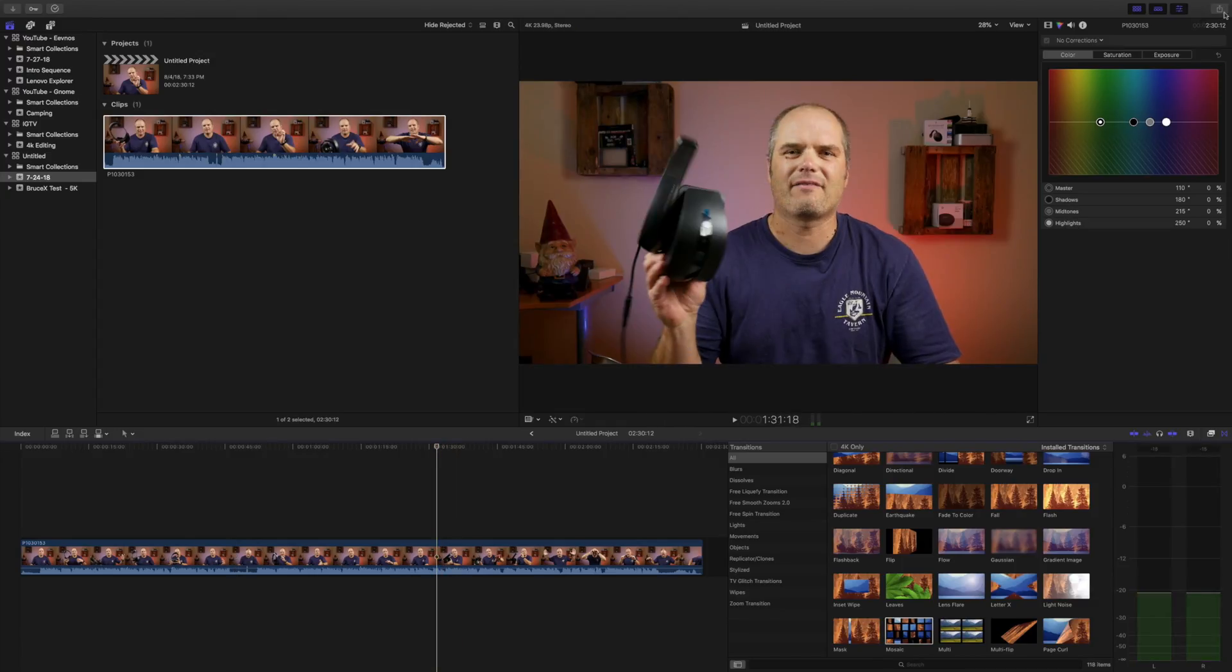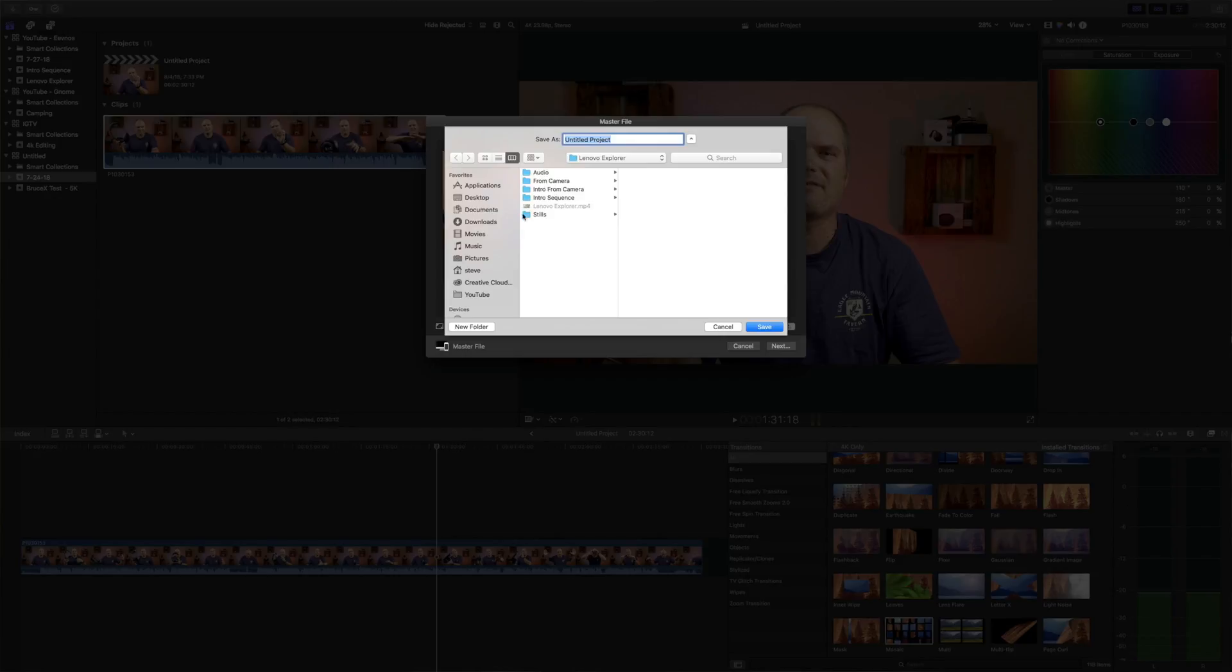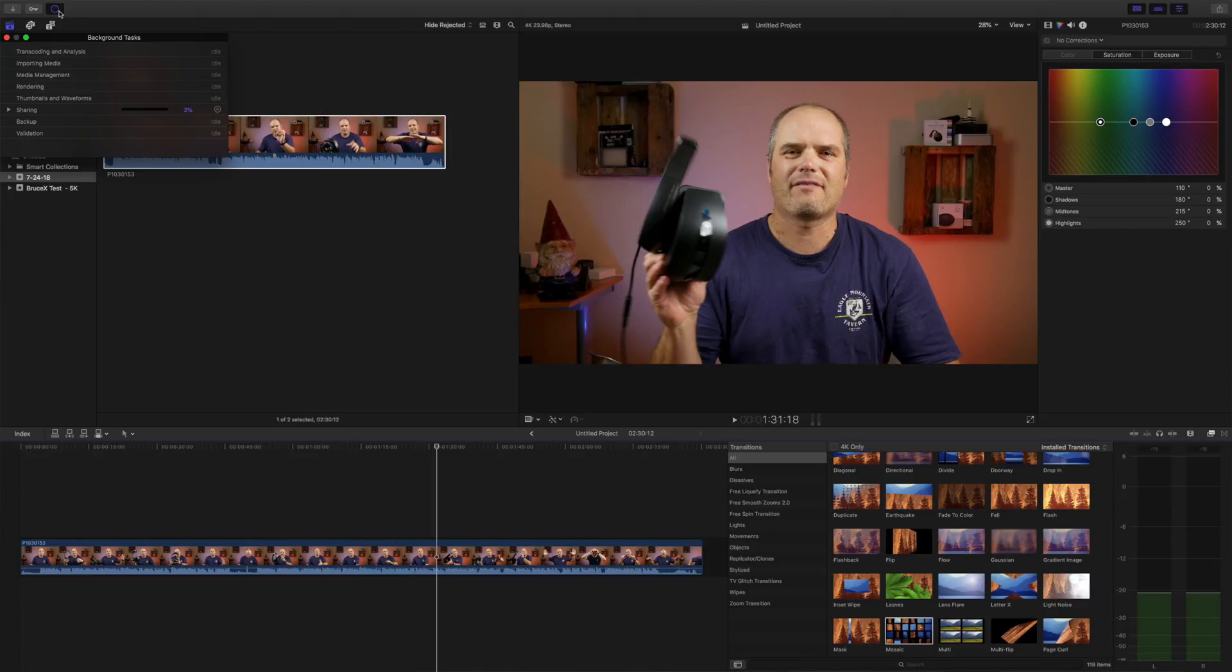So on the rendering side, I exported this two and a half minute video in both H.264 MP4 and a ProRes MOV. The MP4 rendered out in one minute and 44 seconds. That's an average. I ran the export a few times. The average export time was one minute and 44 seconds. And the QuickTime ProRes 422 high quality was two minutes and 17 seconds. So the MP4 was a little bit faster, but both of them were under the time of the actual video, which is pretty impressive.